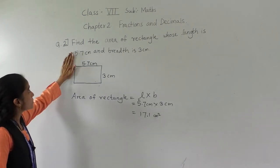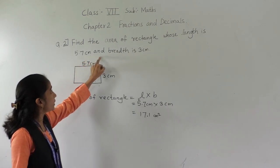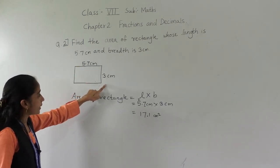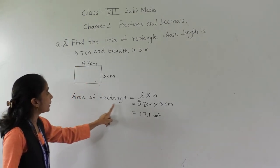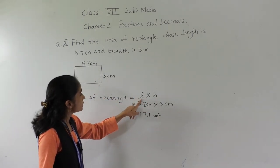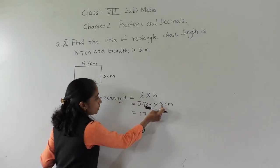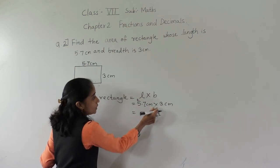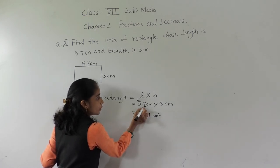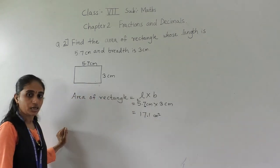Once more I will explain. Find the area of rectangle whose length is 5.7 cm and breadth is 3 cm. Area of rectangle equals length multiplied by breadth — 3 sevens are 21, 3 fives are 15, plus 2 is 17. After the decimal point there is 1 digit, so before 1 digit give the decimal point. Everyone understood this?